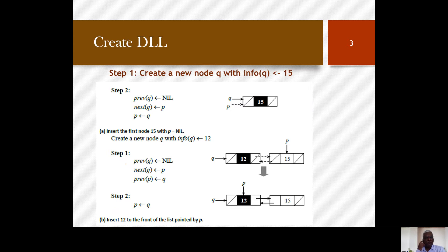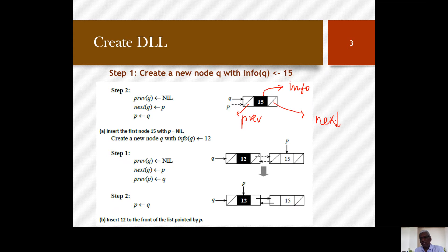Now let's see how to create a doubly linked list from scratch. The structure of each node has an info field in the middle, and instead of just one next field we have two link fields: a previous pointer pointing to the previous node and a next pointer pointing to the next node.